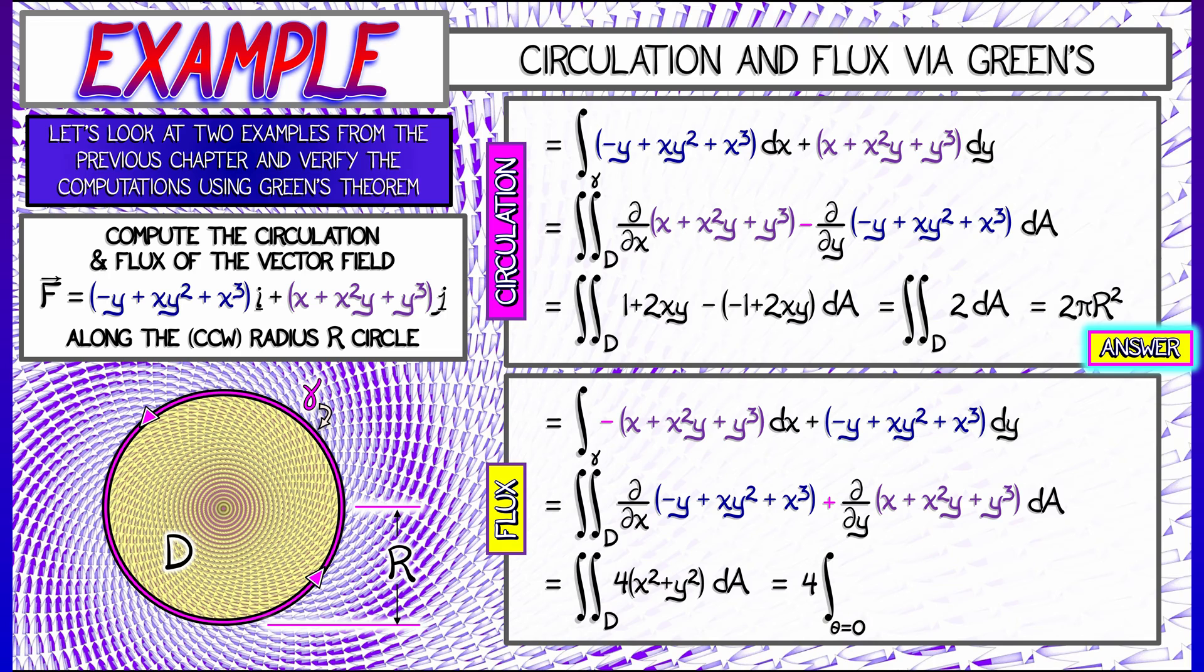You're going to get a double integral as theta goes from 0 to 2 pi, r goes from 0 to r of 4 r squared times the area element r d r d theta. With a little bit of integration, you can show that this is going to give you 2 pi r to the fourth, the same answer we got before.